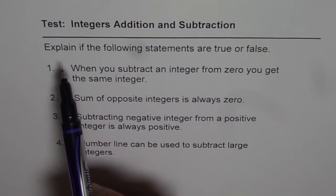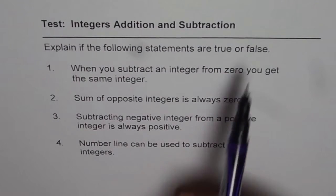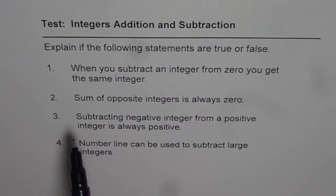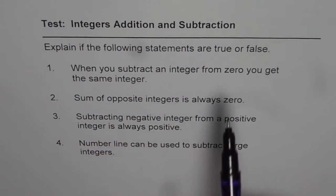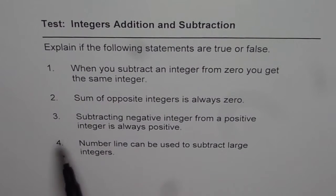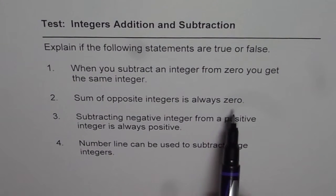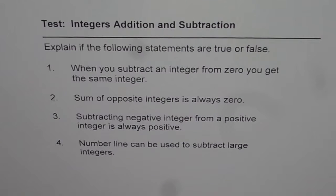Question here is, explain if the following statements are true or false. First one is, when you subtract an integer from 0, you get the same integer. Question number 2, sum of opposite integers is always 0. Question number 3, subtracting negative integer from a positive integer is always positive. Question number 4 is, number line can be used to subtract large integers. I would like you to pause the video, copy these questions, answer and then look into my suggestions.